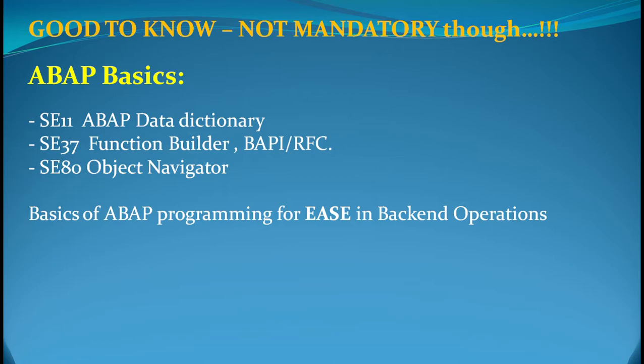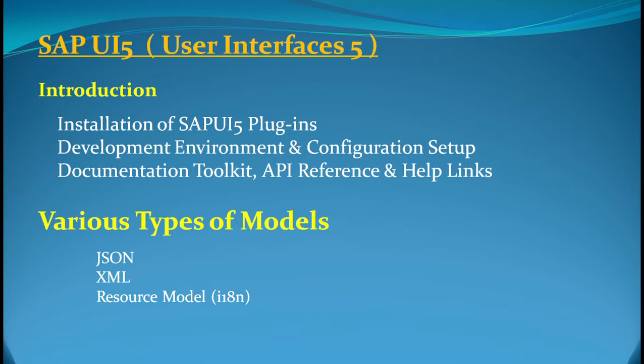I have not covered the OData part in this video — I would cover that in another video. To become an SAP UI5 Fiori developer, it's always good to know the basics of ABAP: having a good understanding of SE11 (the ABAP Dictionary), SE37 (the Function Builder) for BAPIs or RFCs, and SE80 (the Object Navigator). It's not mandatory, but it is an added advantage since most SAP backends connect to ABAP via OData.